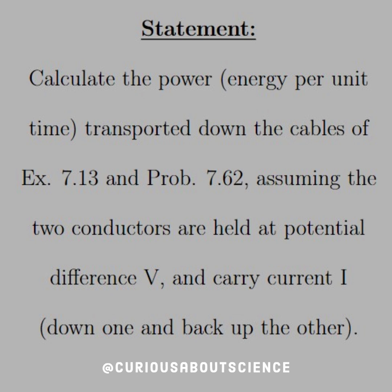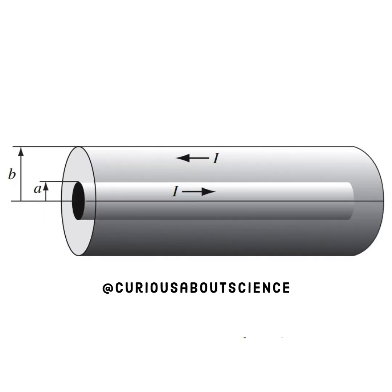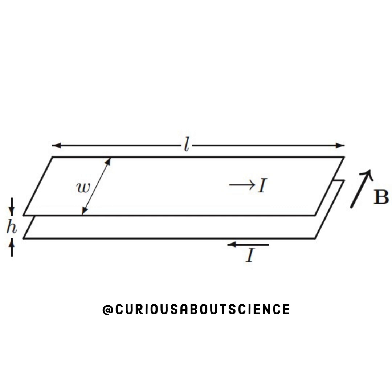So let's go ahead and dive in for our first question. The statement reads: calculate the power — energy per unit time — transported down the cables of example 7.13 and problem 7.62. I'll include a picture, assuming that the two conductors are held at a potential difference V and carry current I down one and back up the other. We have current going down one way and back another at radius A and B, and then we have the sheet separated by distance H with magnetic field inside.